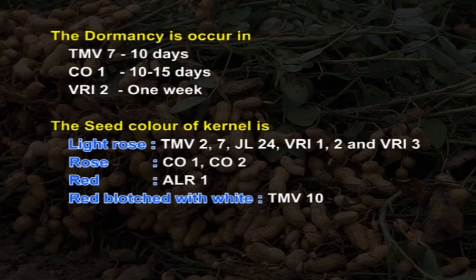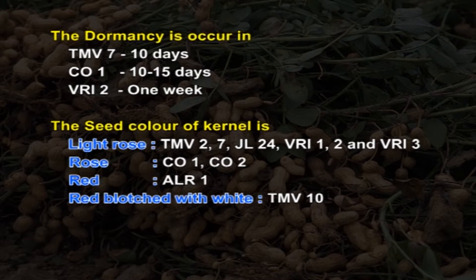Dormancy occurs in some varieties. For example, TMV 7 undergoes dormancy for 10 days, Co 1 for 10 to 15 days, and VRI 2 for 1 week dormancy. The seed color of the kernel varies according to variety. Light rose in case of TMV 2, 7, JL 24, VRI 1, 2 and 3. Rose color in case of Co 1 and Co 2, and red color in case of ALR 1, and red blotched with white in case of TMV 10.